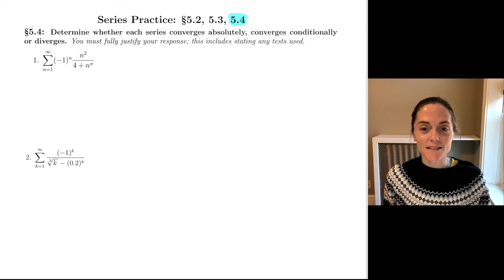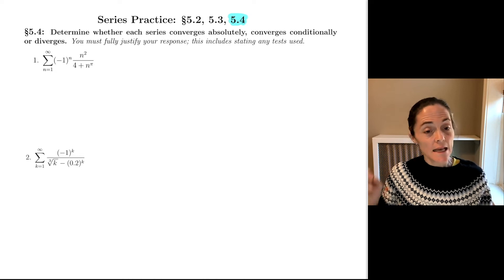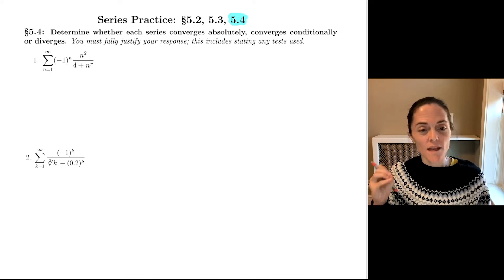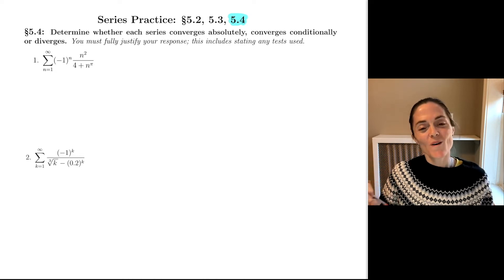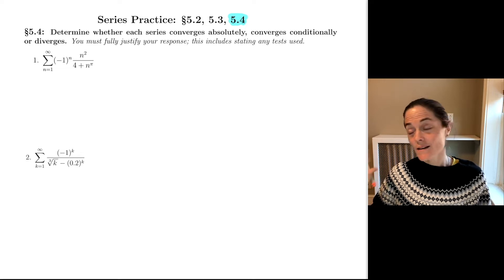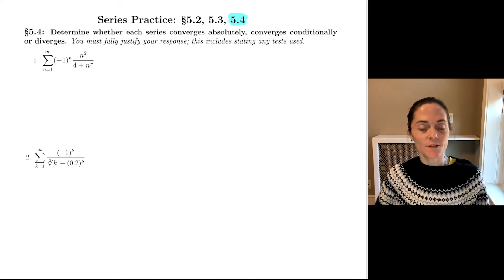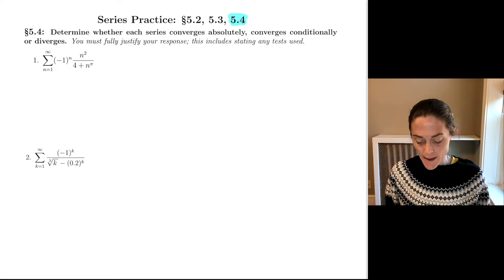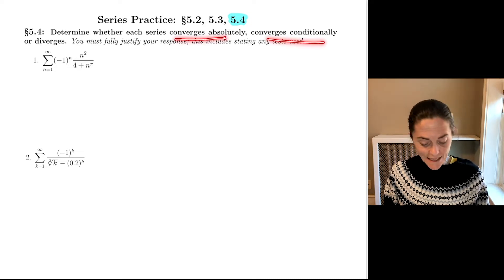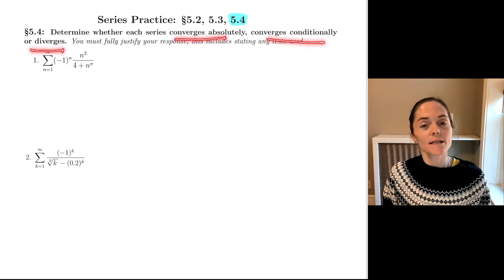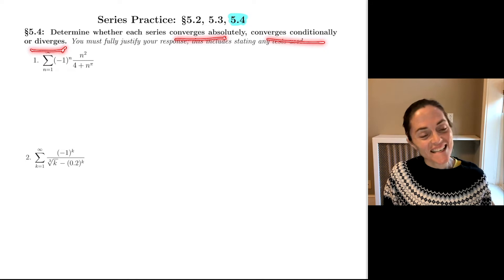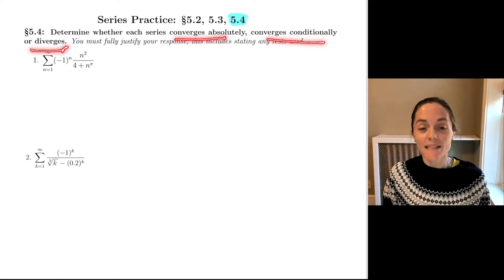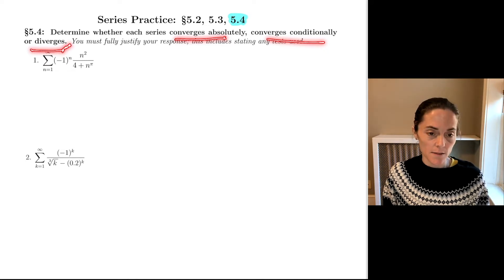Hello, Calculus 2 students. In this video, we will go over five series that are series with positive and negative terms. In particular, we need to determine if each series converges absolutely, converges conditionally, or diverges. Fully justify our response.